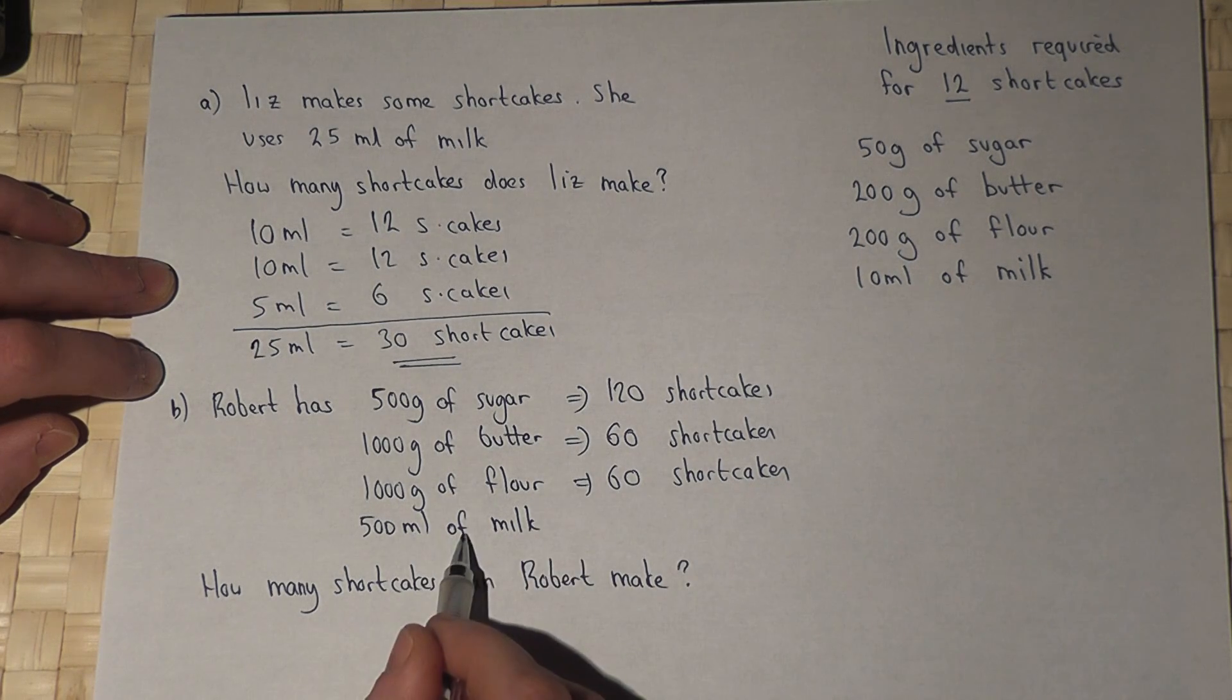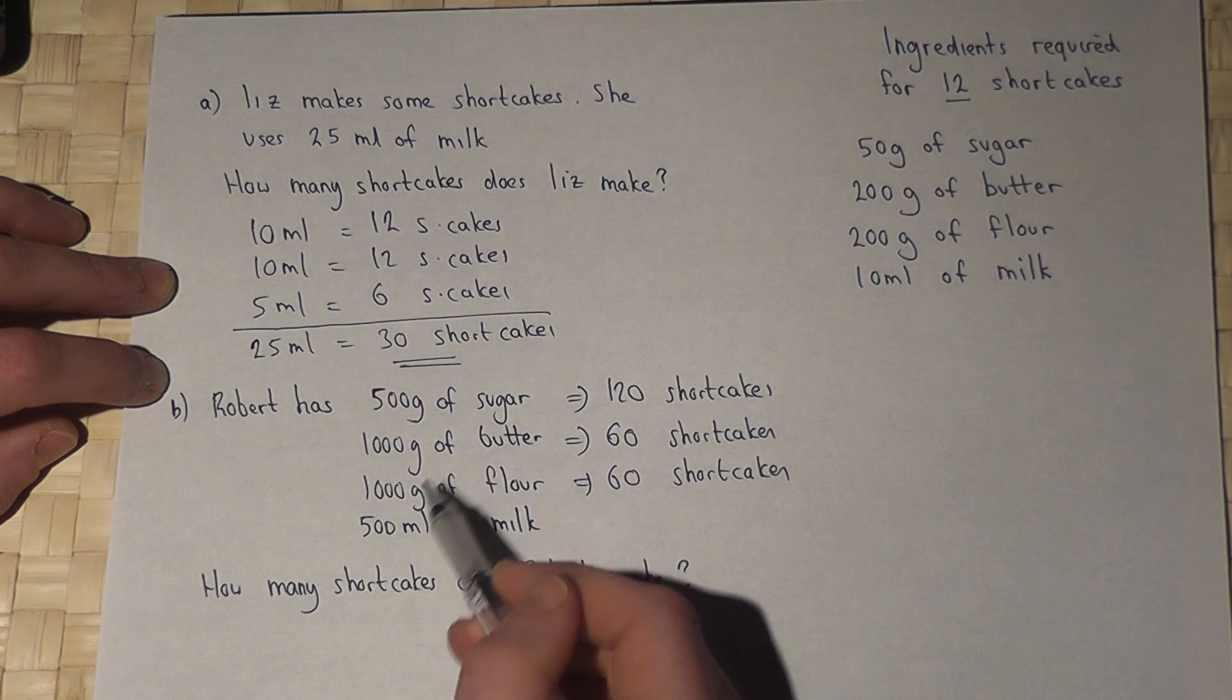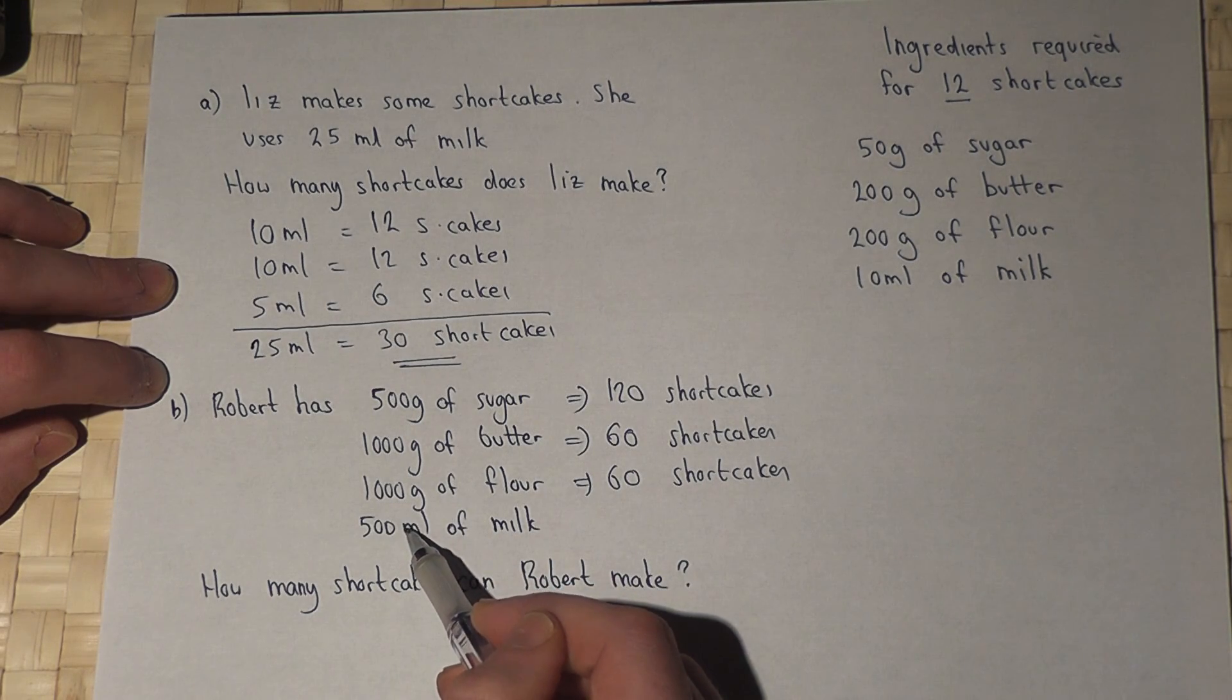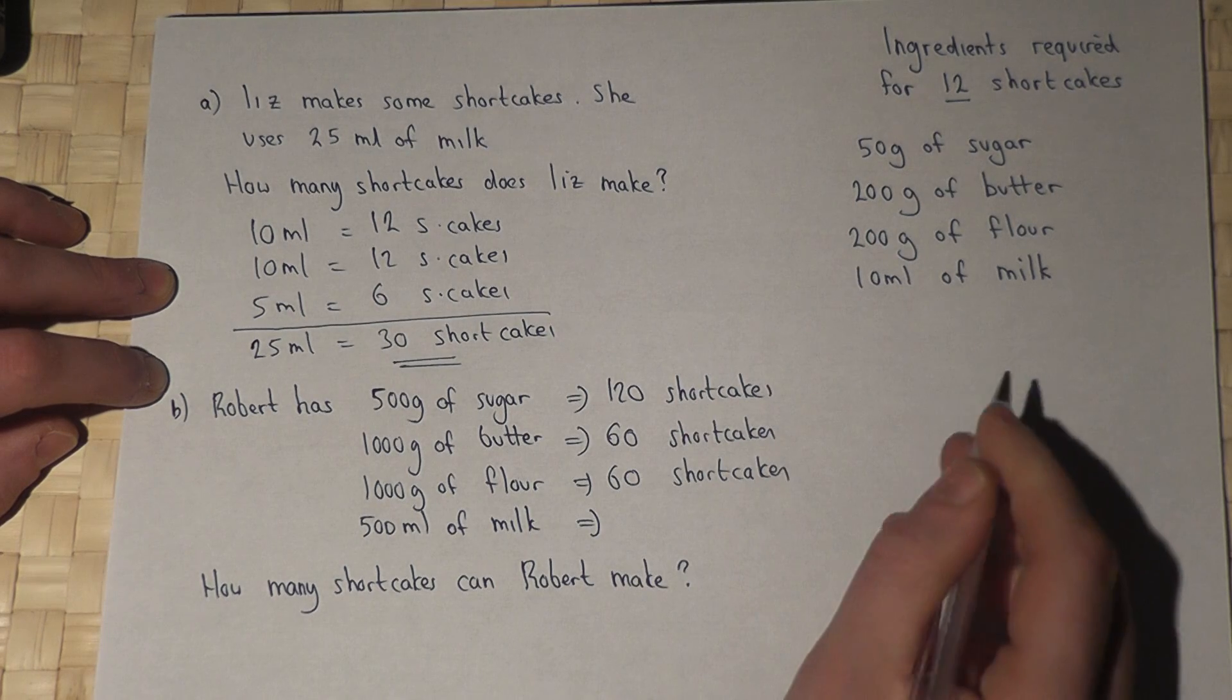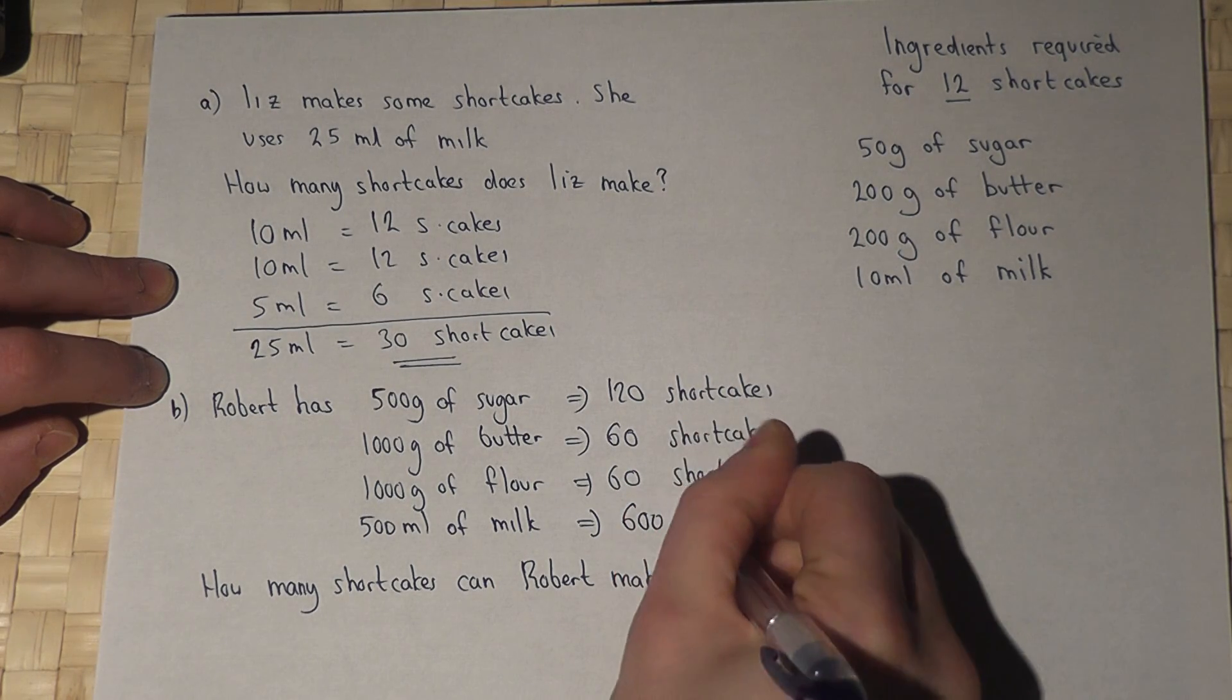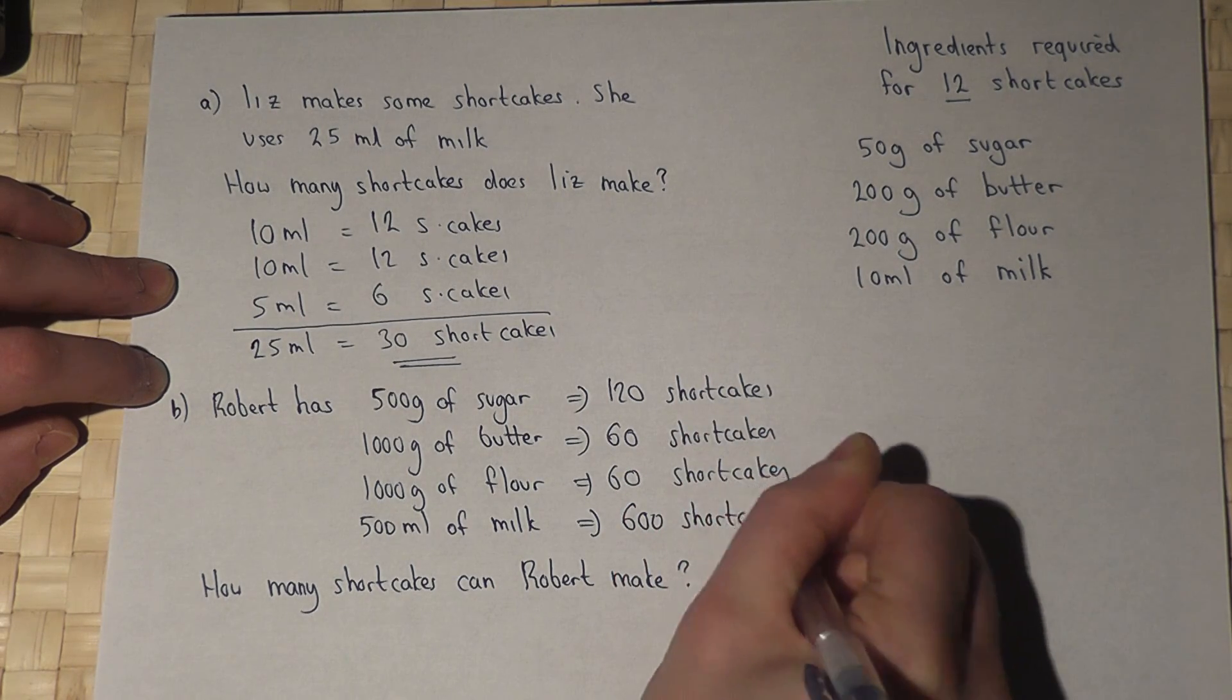Now, the milk—10 to 500 is times by 50. So if I do 50 times 12, I get to 600 shortcakes. So Robert's got lots and lots of milk.